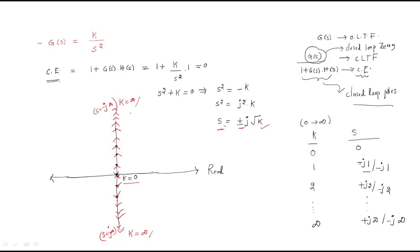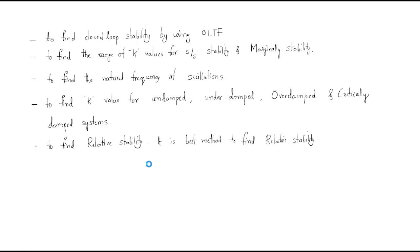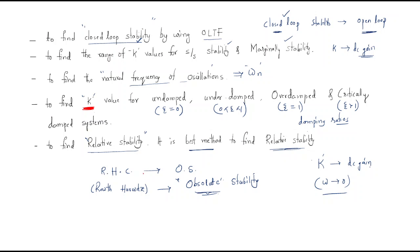This root locus gives the DC gain information. I hope all of you understand this session. Thank you.